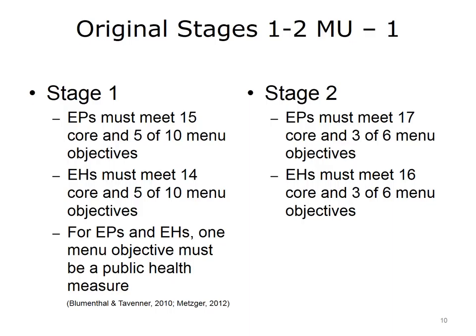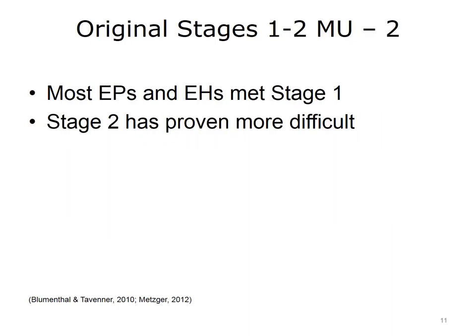In Stage 2, some measures were consolidated and some new ones were added. Eligible professionals had to meet 17 core and 3 of 6 menu objectives, and eligible hospitals had to meet 16 core and 3 of 6 menu objectives. Stage 1 requirements were achievable by most eligible professionals and eligible hospitals, while Stage 2 requirements proved more difficult for many to meet.